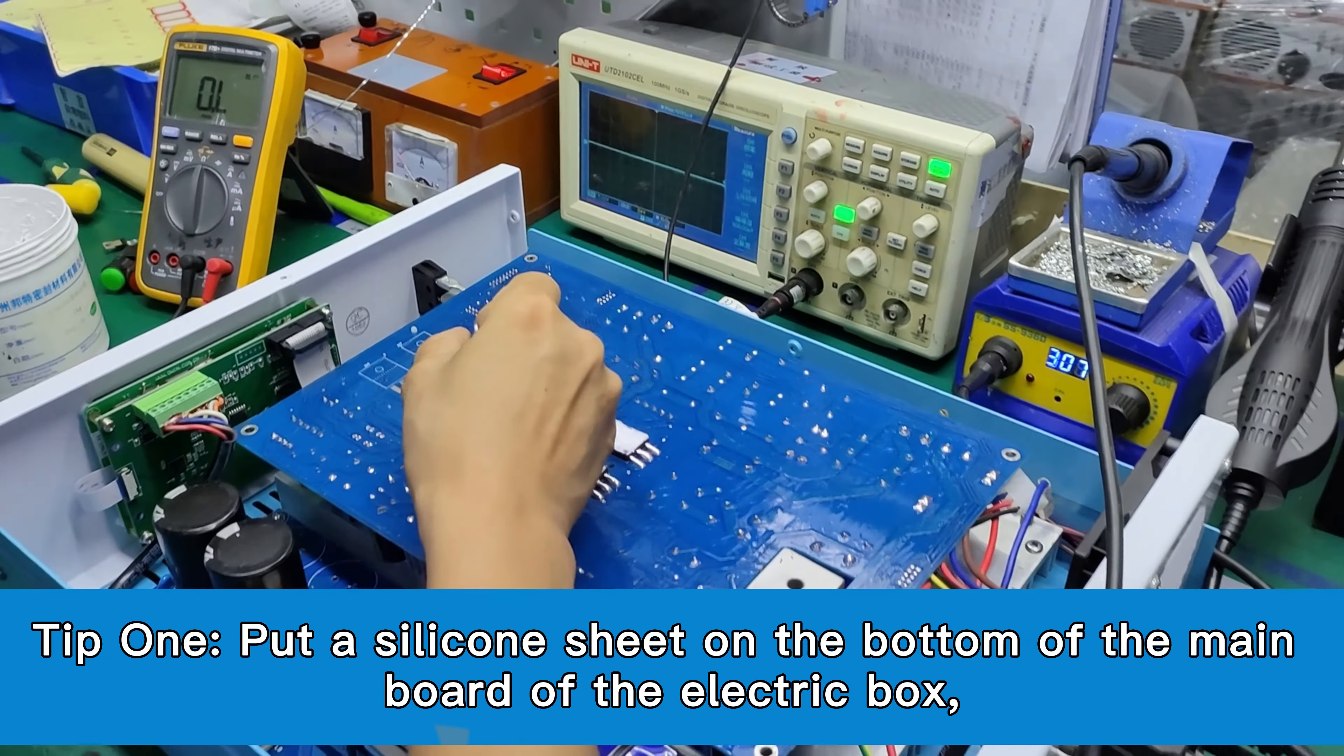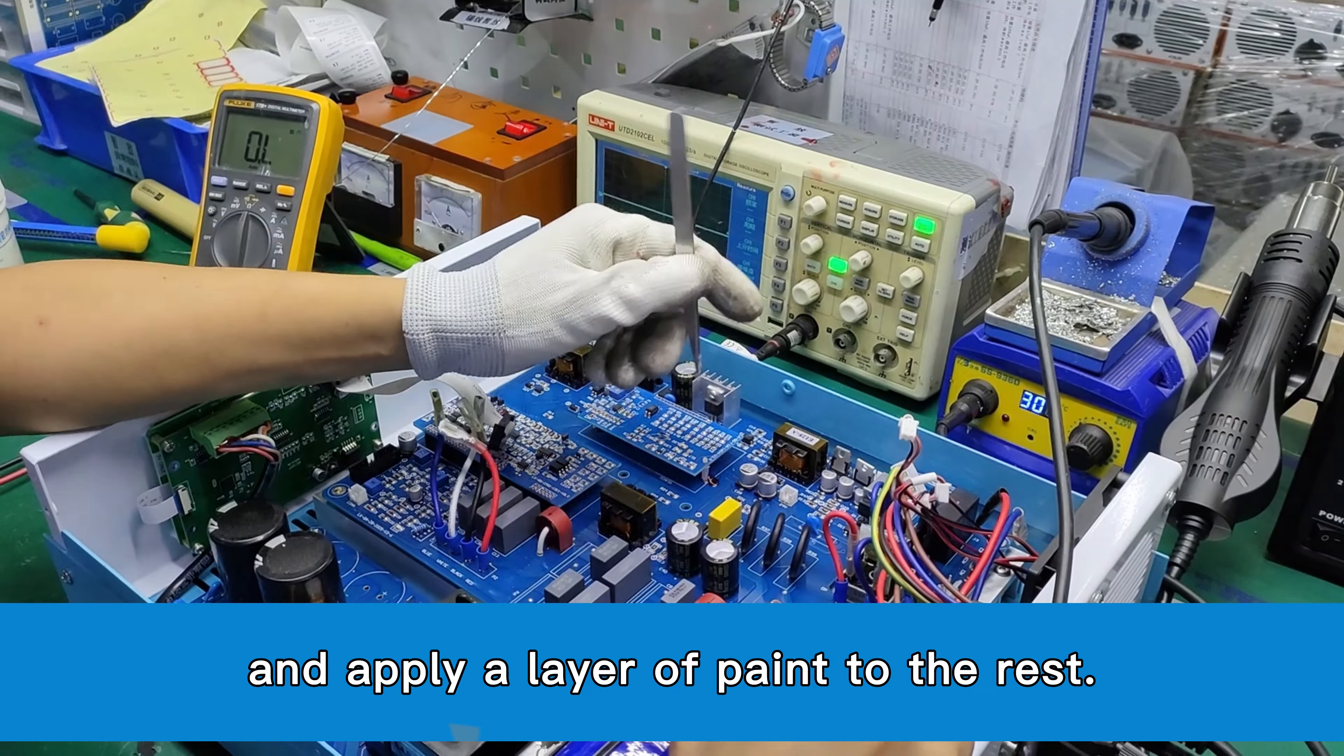Tip 2: After the circuit board is assembled, avoid the interface and apply a layer of paint to the rest.